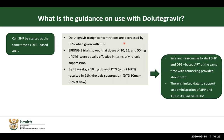In terms of dolutegravir, there is a question: can 3HP be started at the same time as single-dose DTG? Current evidence supports that if you give the two drugs together, there is a drug-to-drug interaction which is not clinically significant. Because even if there is a drop in the trough concentrations of dolutegravir, the actual IC90 levels seem to be at the right drug levels, and most patients would then have virological suppression.